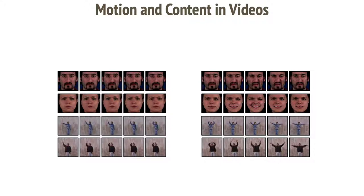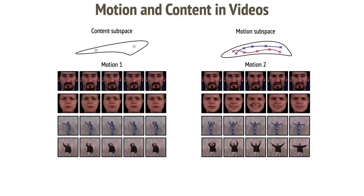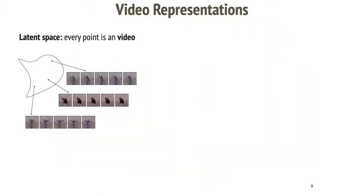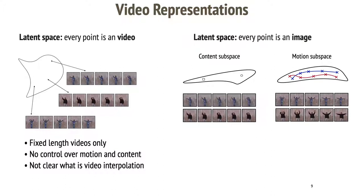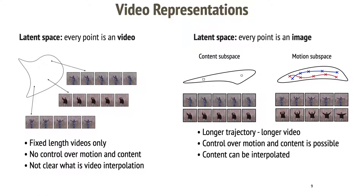We can then use content subspace in which a point defines the object doing the action and a motion subspace in which a trajectory defines temporal execution of the action. Let's now compare the two representations. On the left, every point of the latent space is a video. Such representation supports only fixed-length videos. You cannot control the video and it's not clear what video interpolation means. On the right, we use motion content disentangle subspace. We can generate arbitrary long trajectories which will correspond to arbitrary long videos. We can control content and motion and so on.